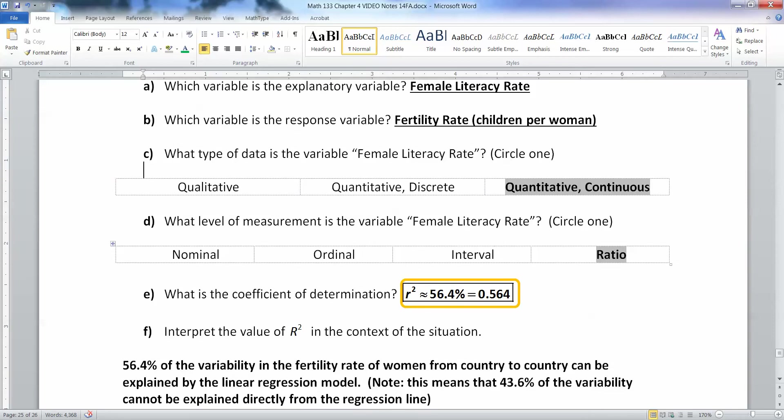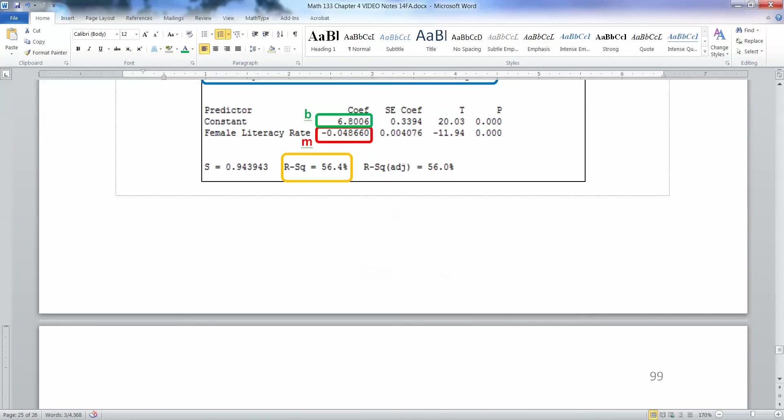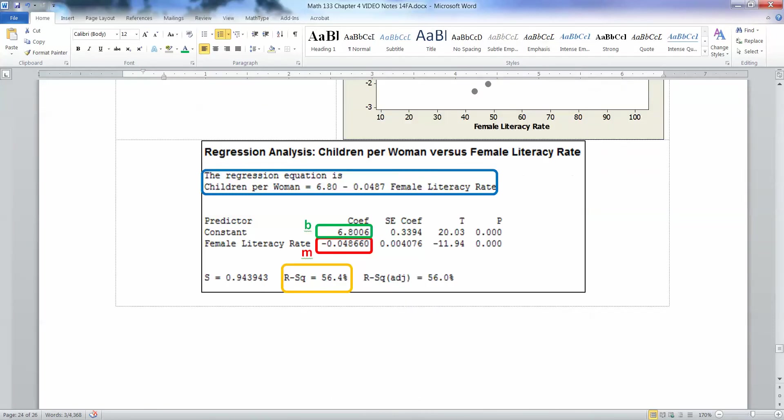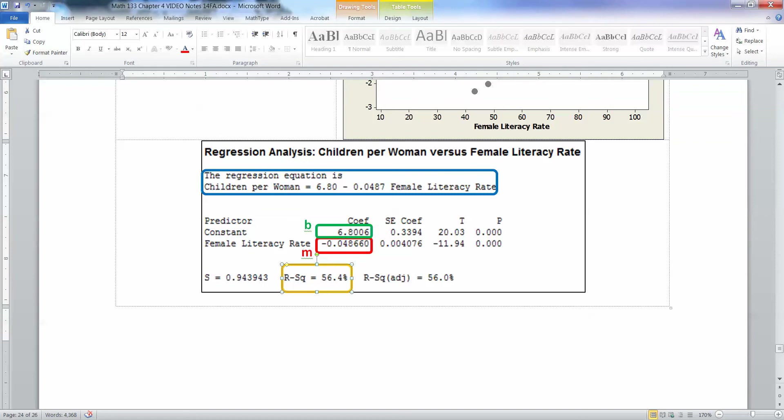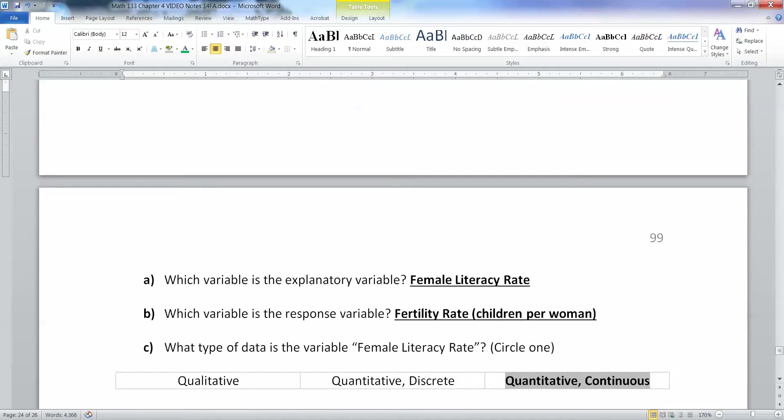Alright, now what about the coefficient of determination? That was one of the things that I circled up here. It's right here. R-Sq, Sq squared. So this is R squared. And it's 56.4%. Ignore the R squared adjusted thing. That's a whole other type of R squared that we are not dealing with in this course at all. Again, if you were studying chapter 14, that might become interesting to you, but we are not studying that. So we're just going to ignore it and stick with the regular R squared.